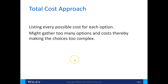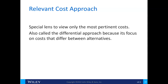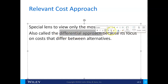The total cost approach lists every single cost for each option, but that increases complexity. What you want to do is only list those things that make a difference and keep it simple. We use what's called the differential approach — like a special lens to view only the most pertinent costs — because we focus on costs that differ between alternatives.